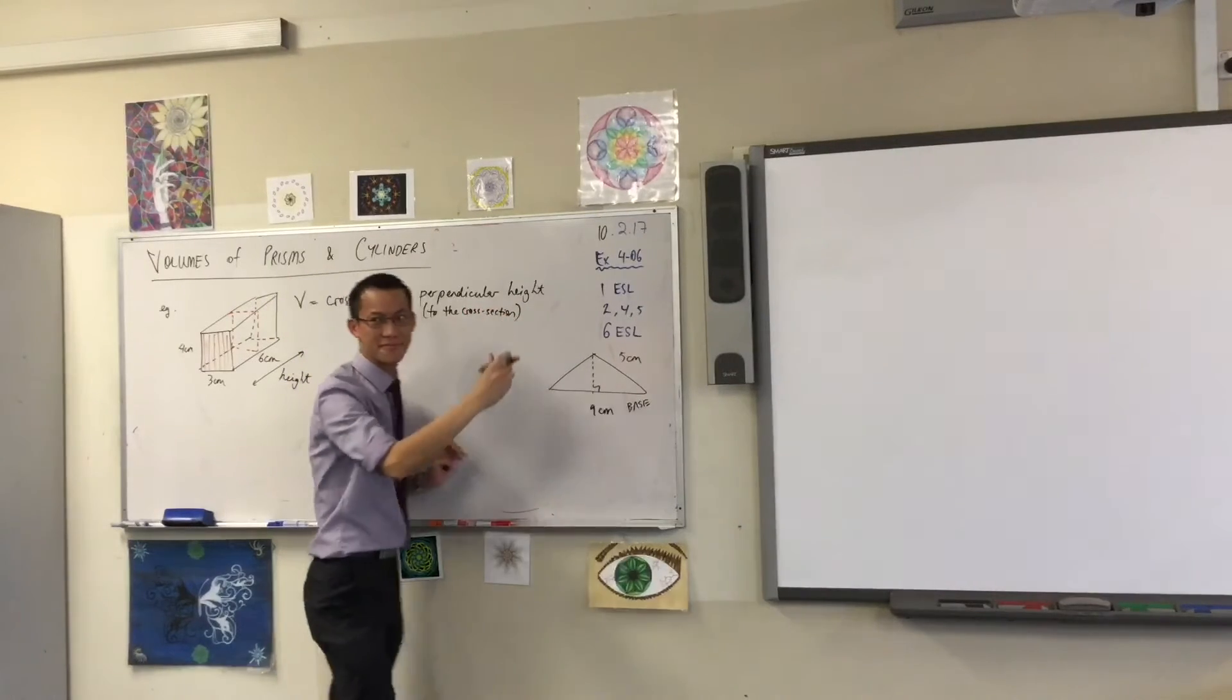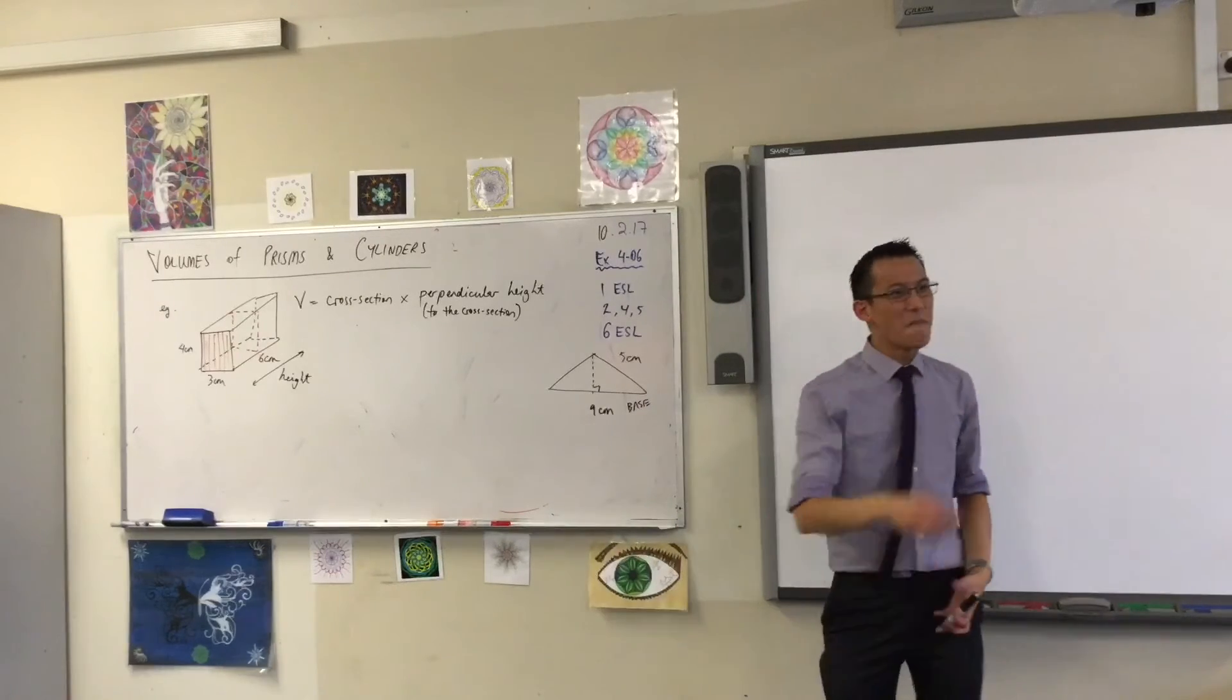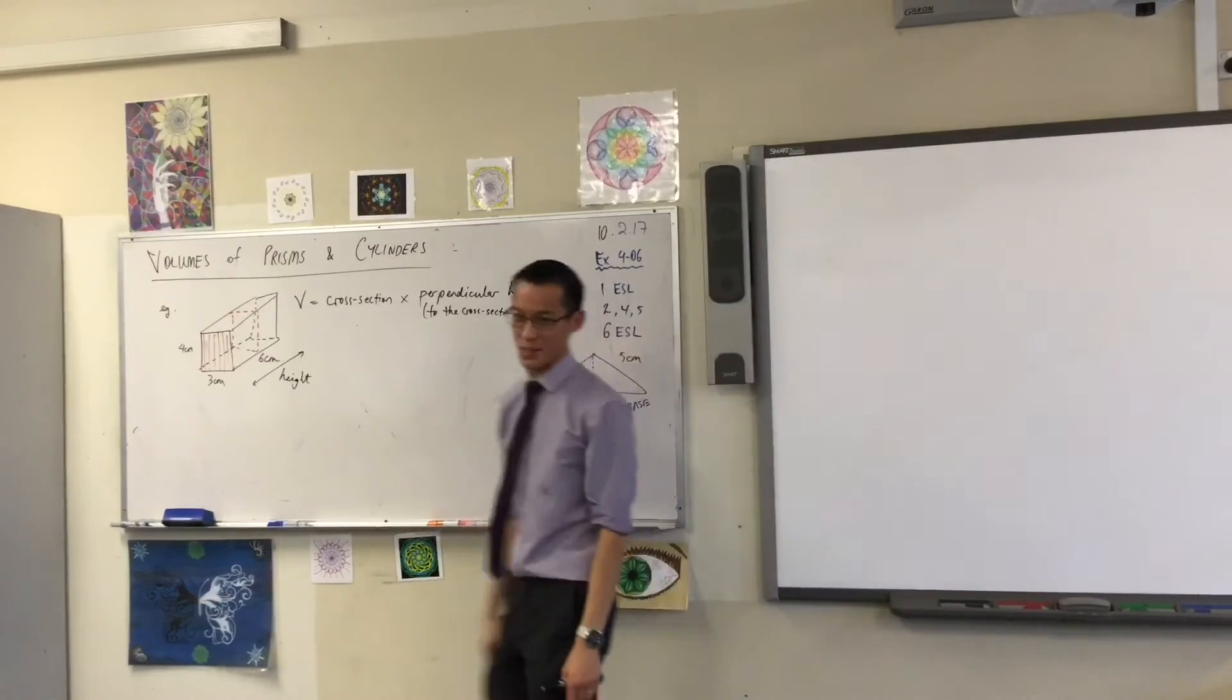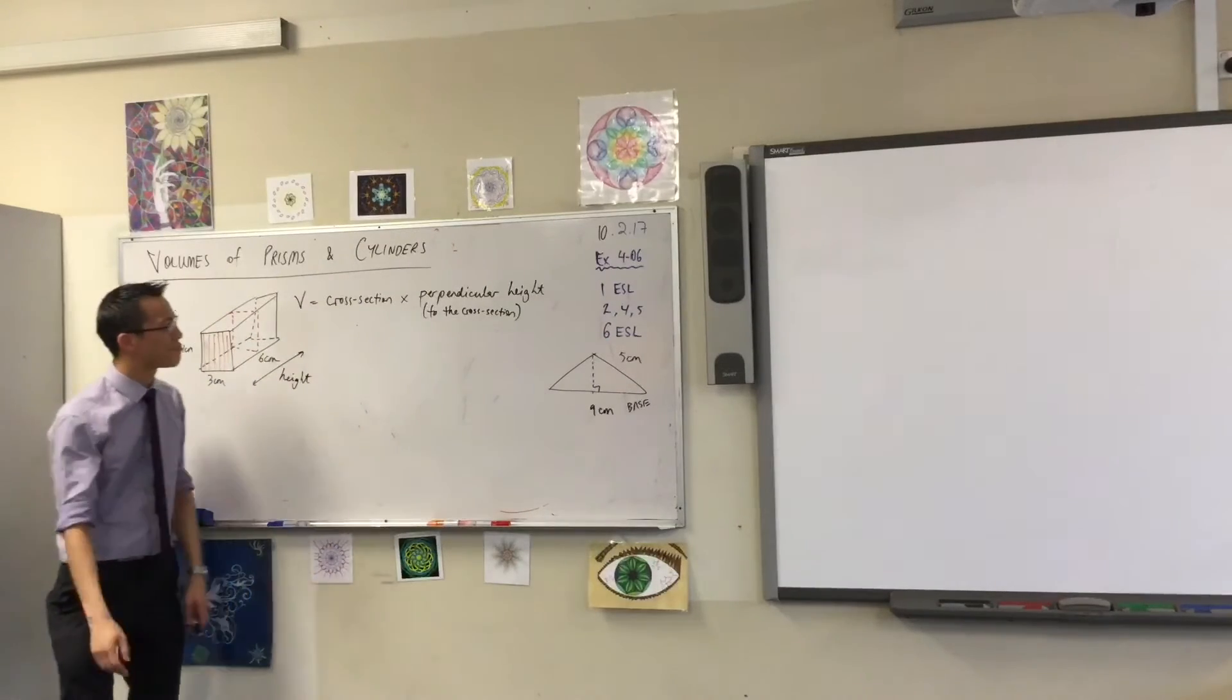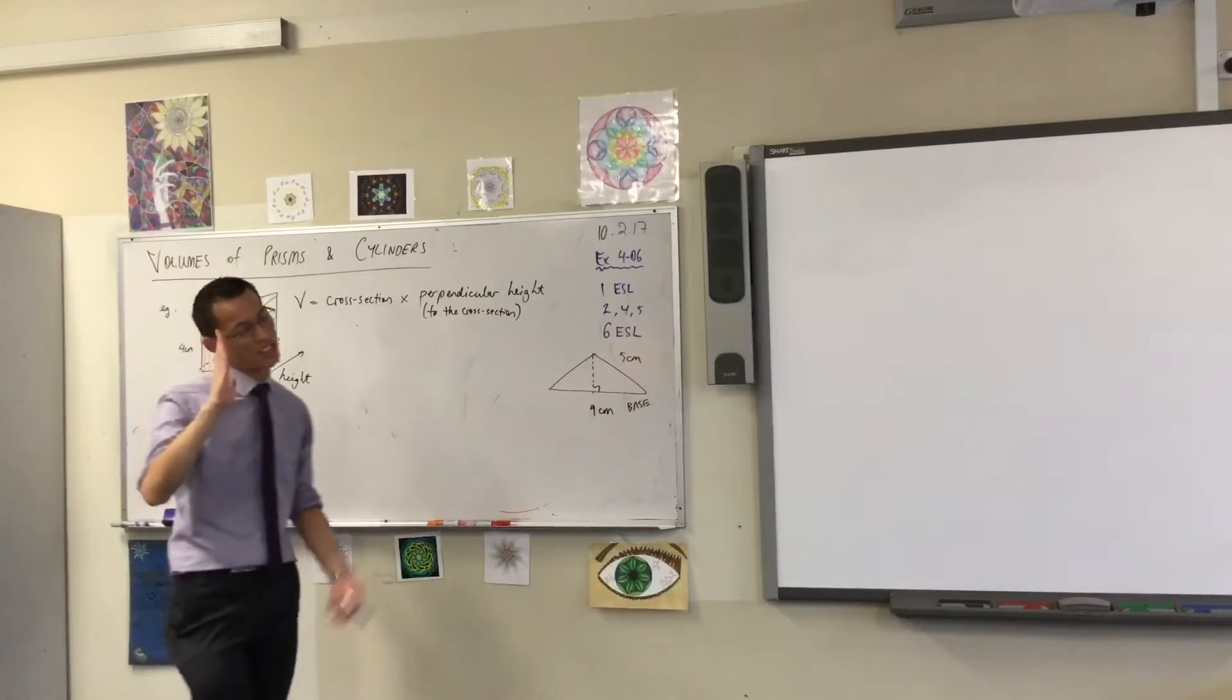That's funny. Yeah. That's funny, sir. Cross sections are funnier than I thought. Now, the reason why I point that out is because, depending on how your shape has been drawn, that perpendicular height, if you're lucky, it might go up and down, just like most heights do.